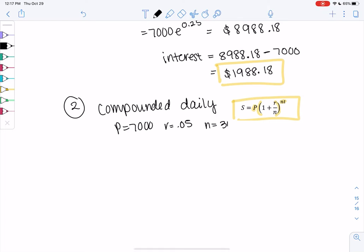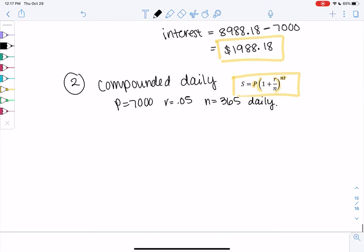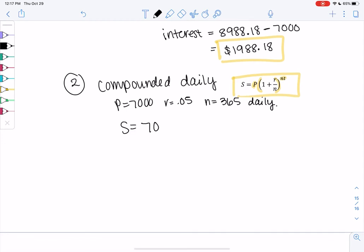So daily means N is 365 because there's 365 days in a year. So S will be 7,000 times 1 plus 0.05 over 365, all to the 0.05 times 365. Oops. There's no R in the power. 365 T.